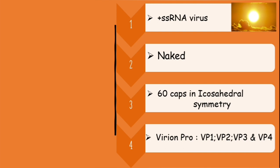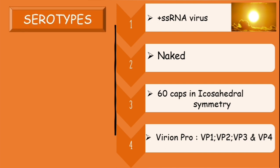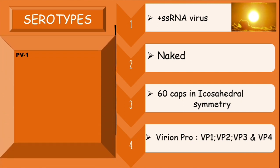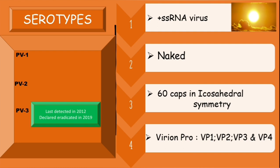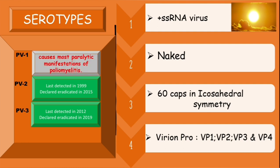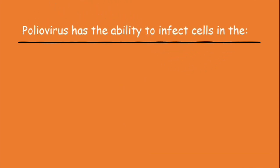Now let's talk about serotypes of the poliovirus. There are three serotypes: poliovirus 1, poliovirus 2, and poliovirus 3. Poliovirus 3 was last detected in 2012 and declared eradicated in 2019. Poliovirus 2 was last detected in 1999 and declared eradicated in September 2015. Unfortunately, poliovirus 1 still exists and causes most of the paralytic manifestations of poliomyelitis.